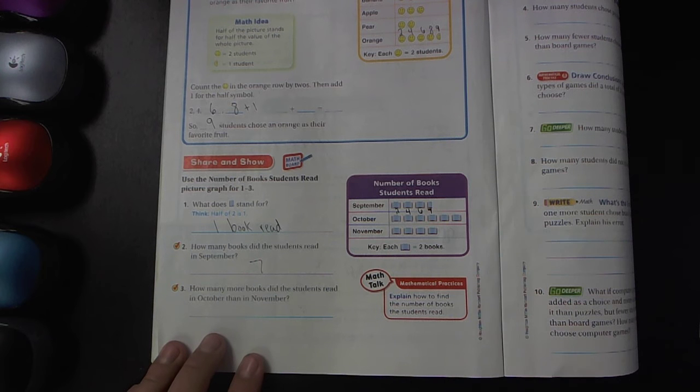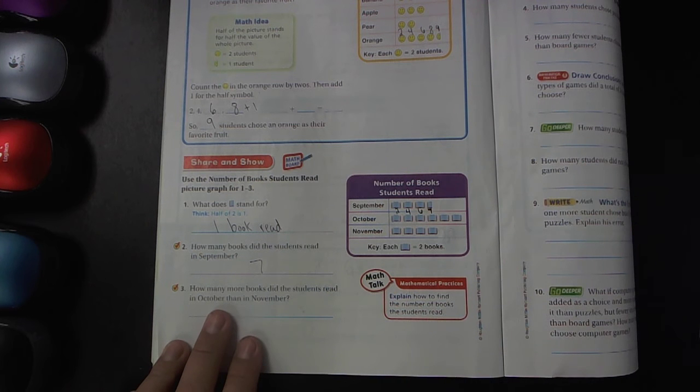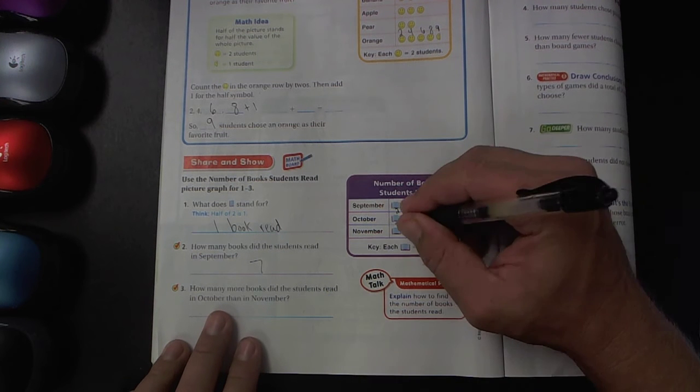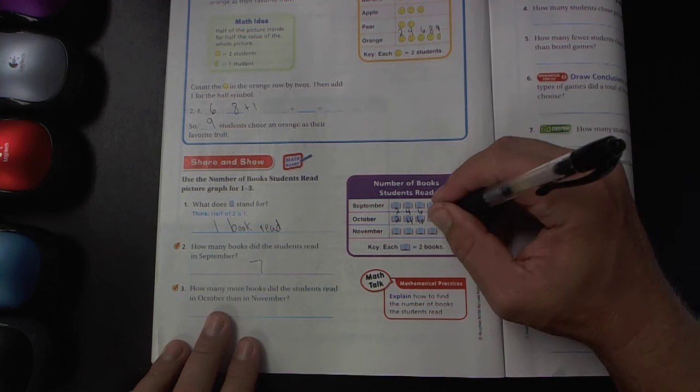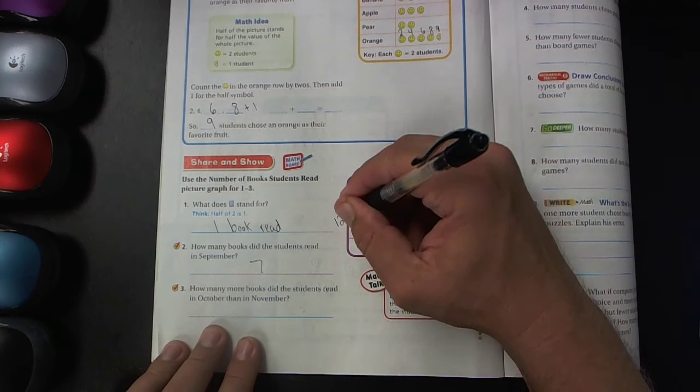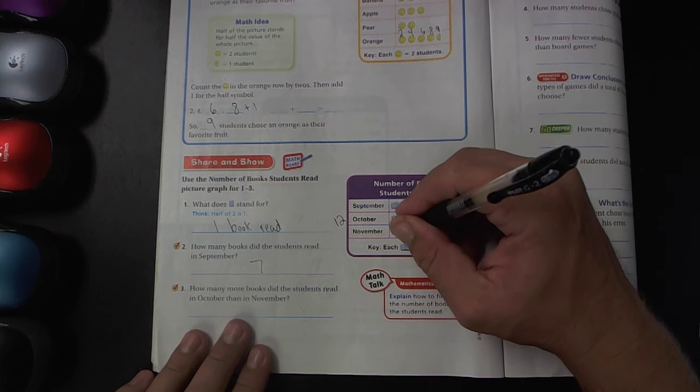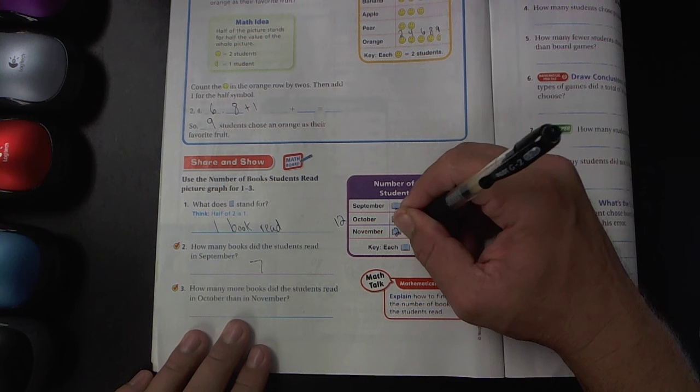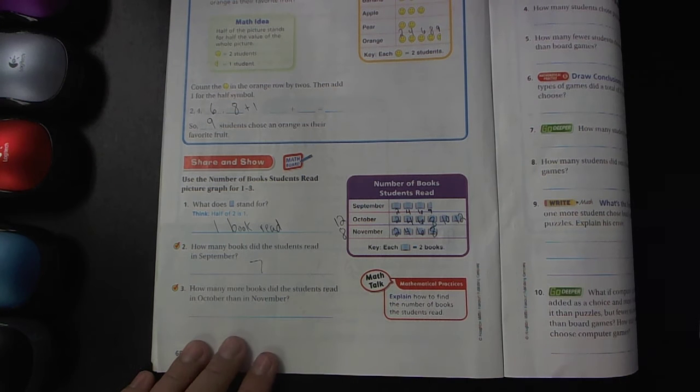And the last question for this math lesson, number three, how many more books did the students read in October than in November? Well, first we need to find out how many books were read in October. Let's see, two, four, six, eight, ten, twelve books were read in October. I just put that right there. How many books were read in November? Two, four, six, eight. Eight books were read in November.